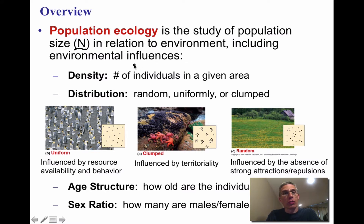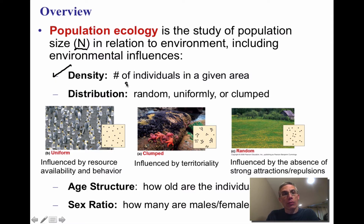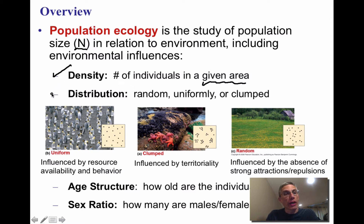The environment includes various types of influences. There are four different influences to be aware of. The first is density, which in population ecology refers to the number of individuals in a given area of that environment. The second is distribution, which refers to where a population is found and how it is organized within the environment.